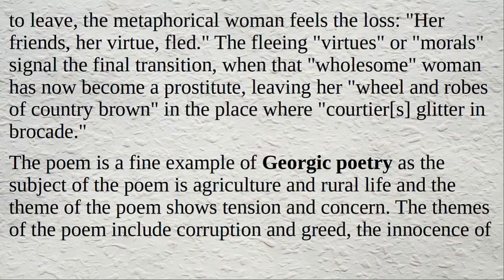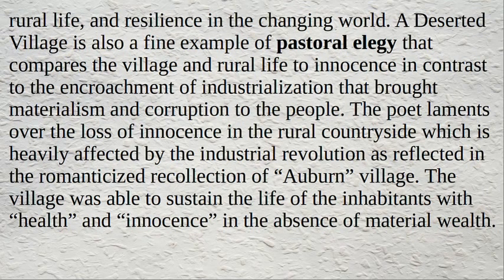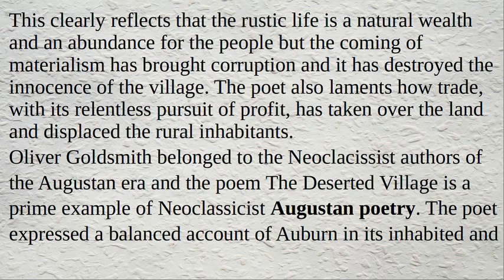The themes of the poem include corruption and greed, the innocence of rural life, and resilience in a changing world. A Deserted Village is also a fine example of pastoral allegory, comparing the village and rural life to innocence in contrast to the encroachment of industrialization that brought materialism and corruption. The poet laments the loss of innocence in the rural countryside, heavily affected by the industrial revolution, as reflected in the romanticized recollection of Auburn village. The village was able to sustain the life of its inhabitants with health and innocence in the absence of material wealth.